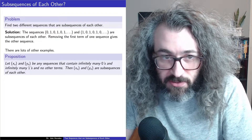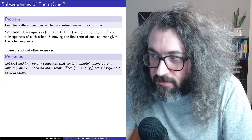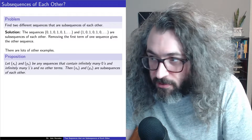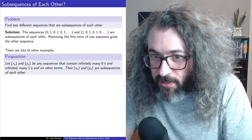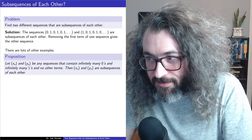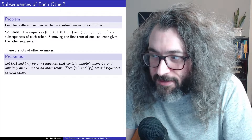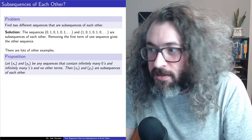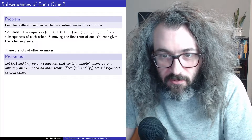Here is a proposition. Let x_n and y_n be any sequences that contain infinitely many zeros and infinitely many ones and no other terms. So both x_n and y_n have to have infinitely many zeros and infinitely many ones and nothing else. And then in that situation, x_n and y_n are subsequences of each other. So there's lots of examples — the two sequences above are way too special.